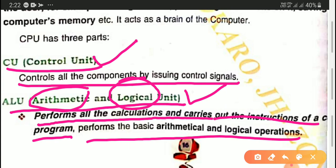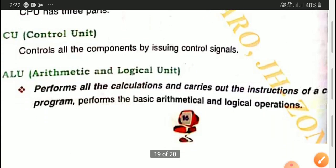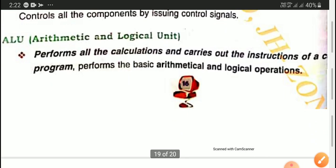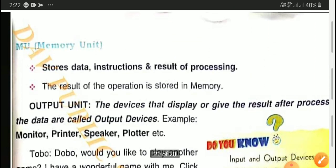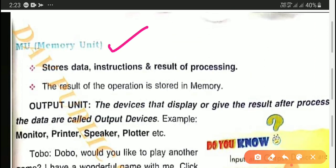The third part is the memory unit. After controlling and processing, the data needs to be remembered and stored. So what the memory unit does is store data, instructions, and the results of processing.